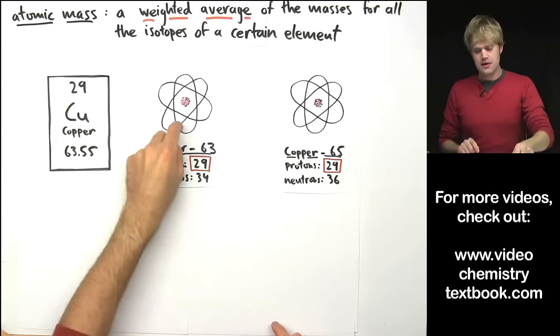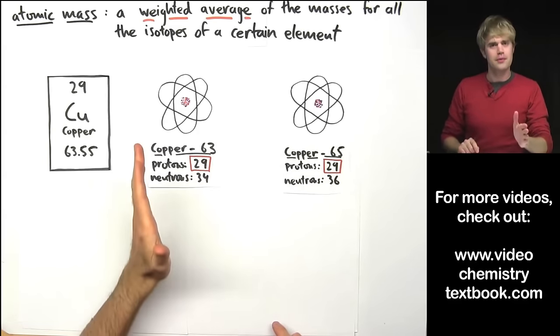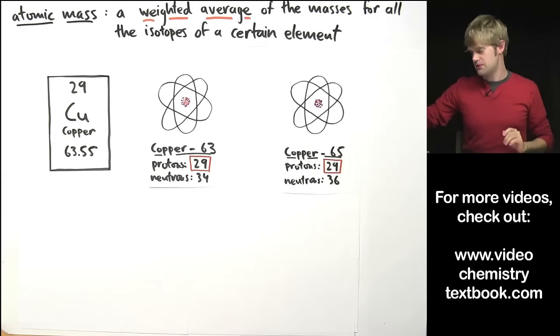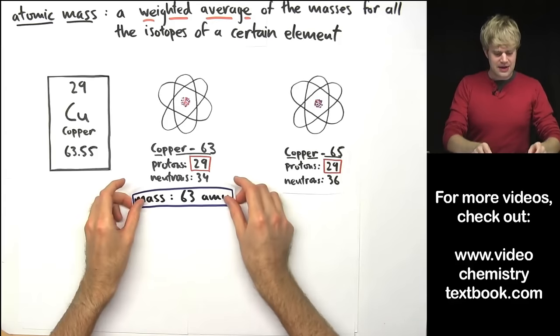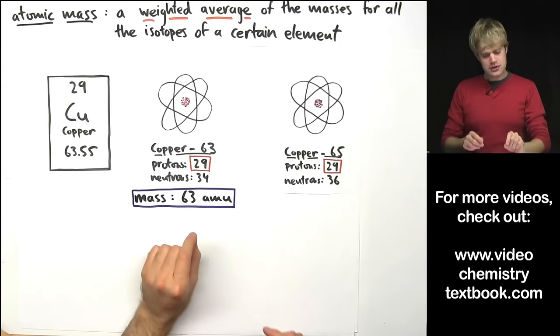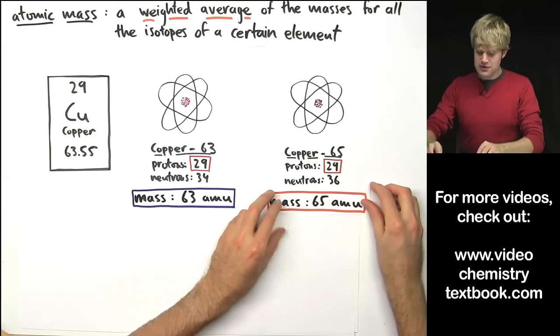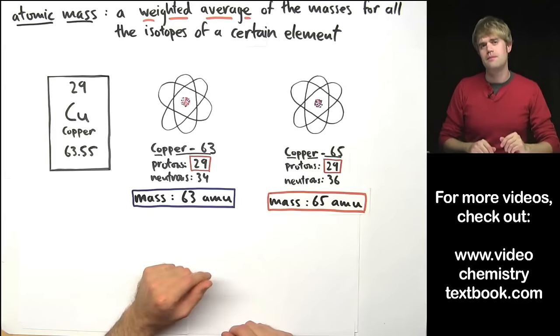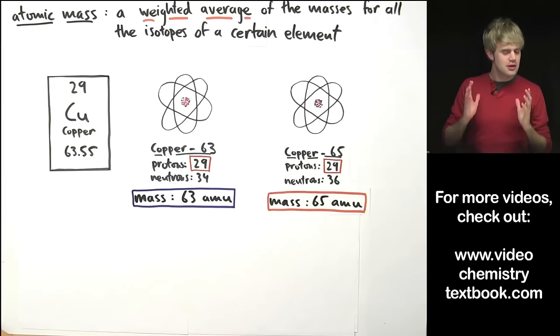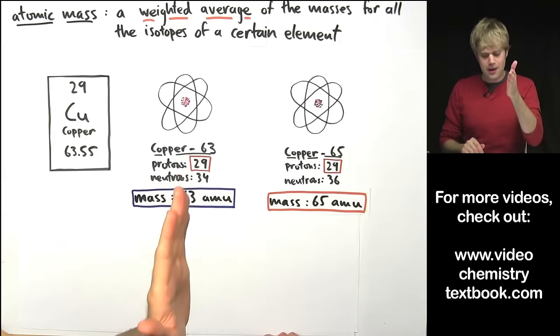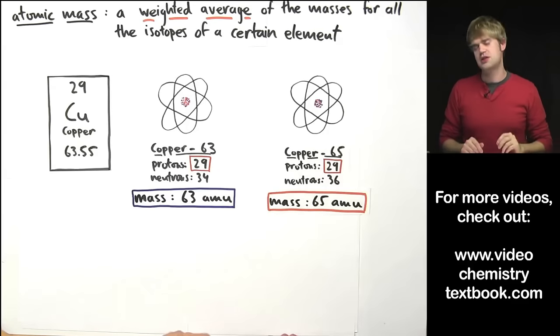Just like the Lamona, these two versions of copper, these two isotopes of copper, have different masses. So the mass of copper-63 is about 63 AMU and the mass of copper-65 is about 65 AMU. But also, just like the Lamona, we don't have the same number of copper-63 and copper-65 atoms.